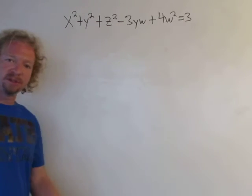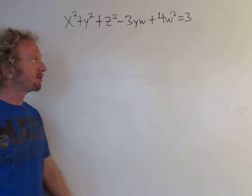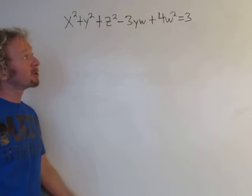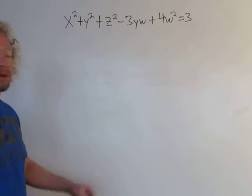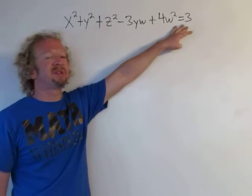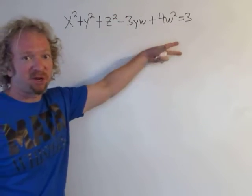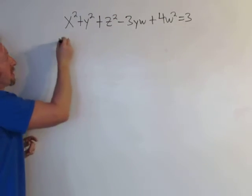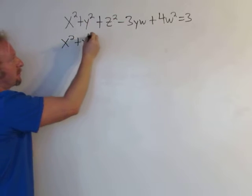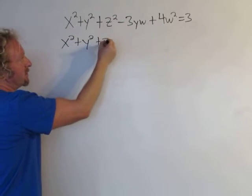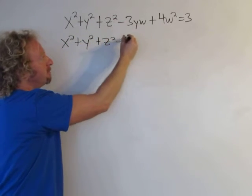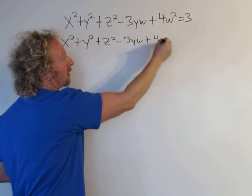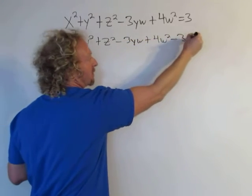On this video we're going to use implicit differentiation to find some partial derivatives. We're going to use some formulas, but before we use the formulas it's really important that we have zero on one side of the equation. So we'll start by subtracting three. I'm going to rewrite this: x squared plus y squared plus z squared minus three y w plus four w squared minus three, and that's equal to zero.